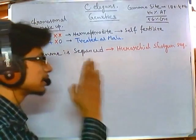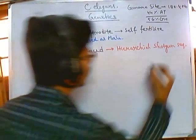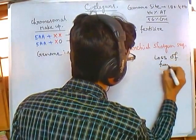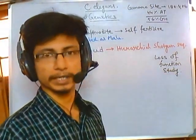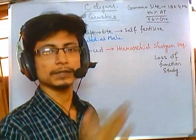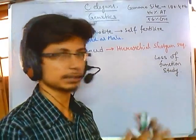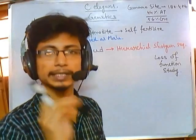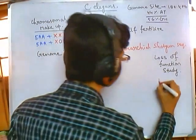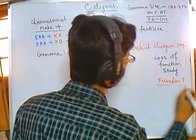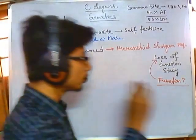The most important study we can carry out using C. elegans is the loss of function study. As we look at different stages of development, we want to find which genes are functioning at which time points — and the easiest way to determine a gene's function is through loss of function studies. Finding the function of a gene is a tedious task, and loss of function studies are the way to do it.